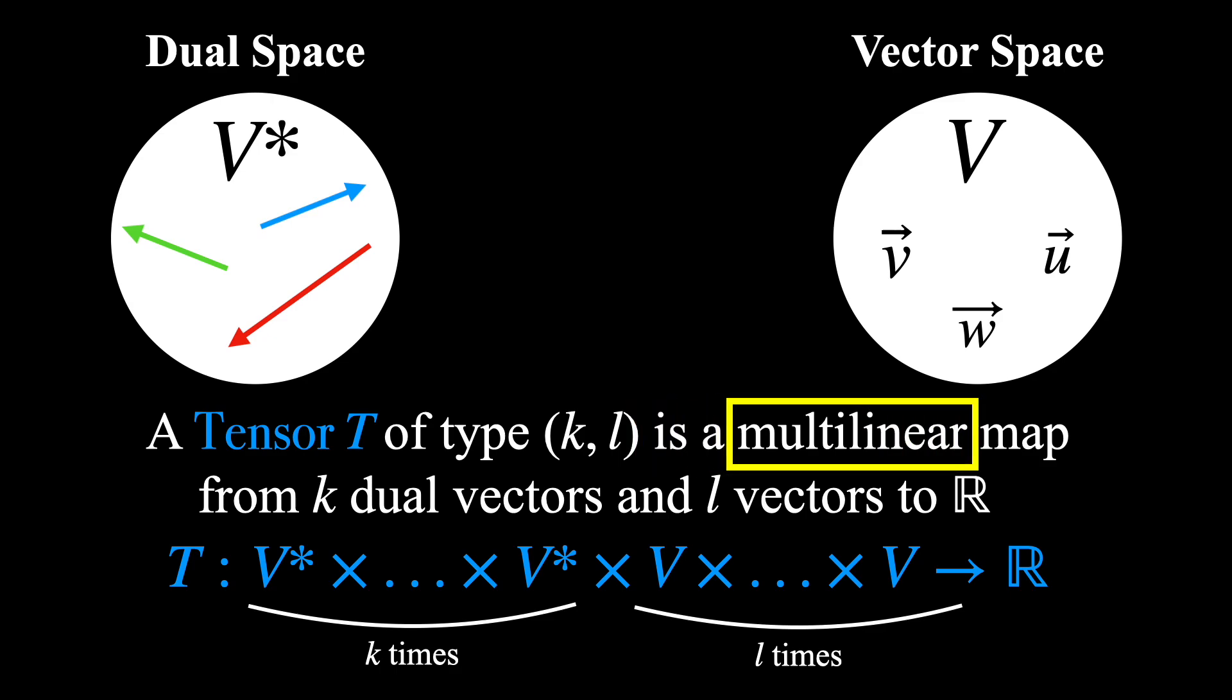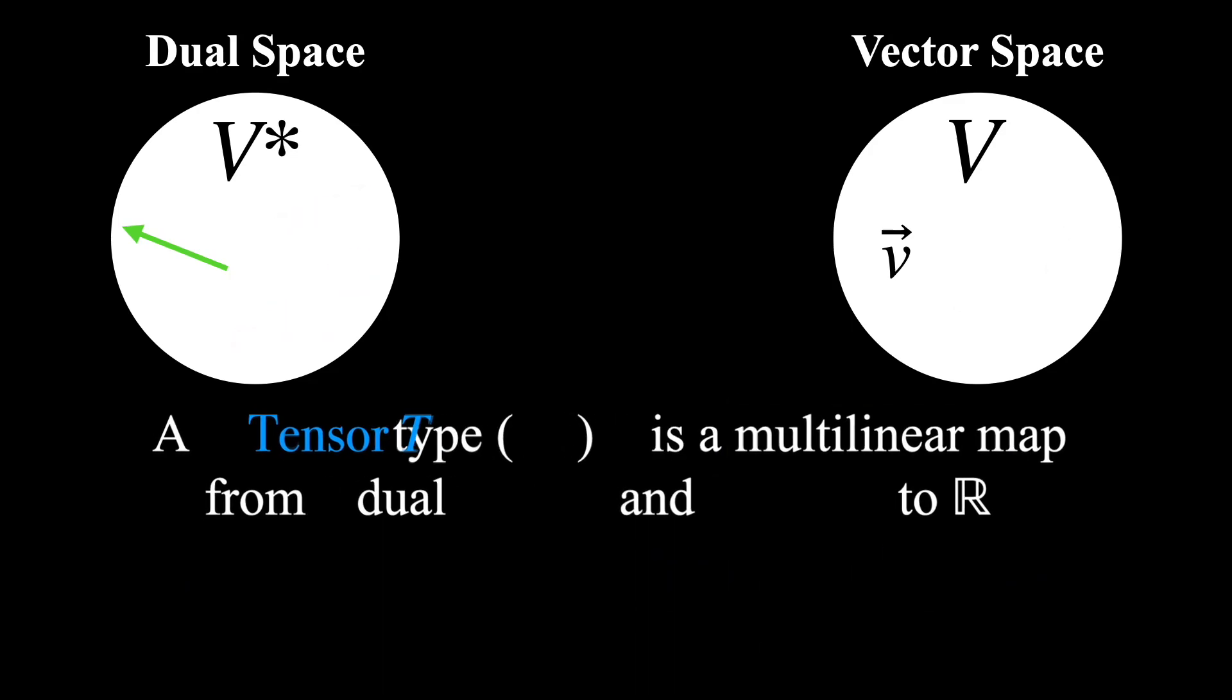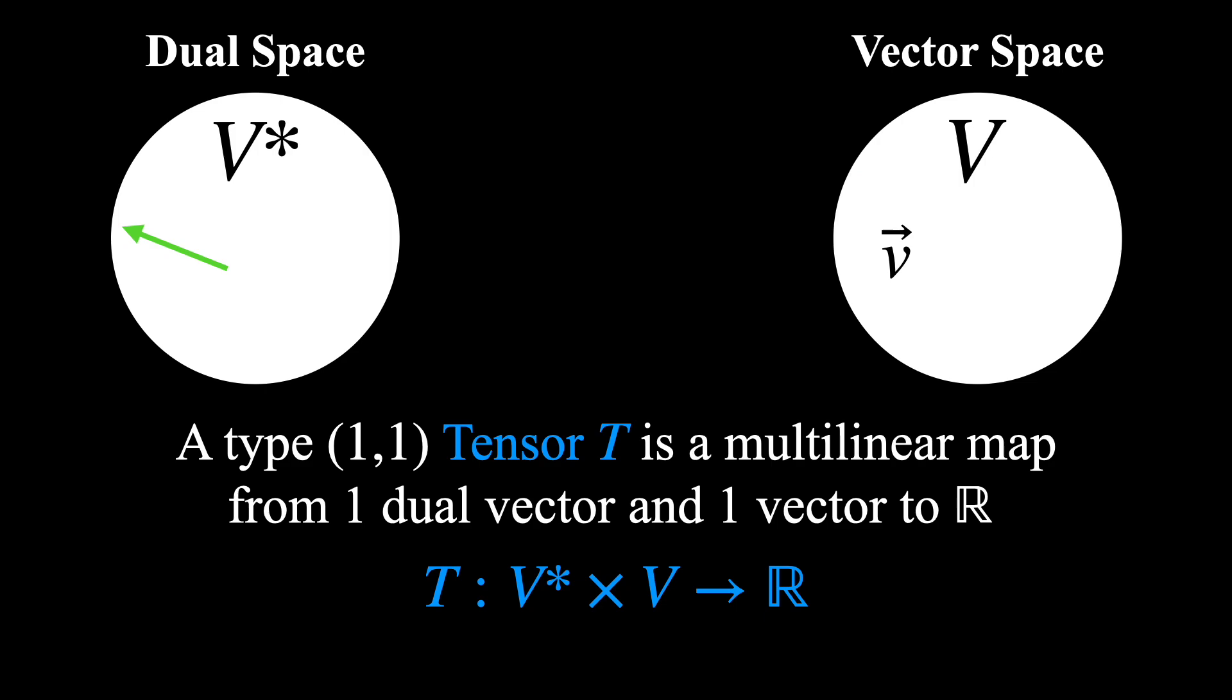Secondly, this map must be multilinear, which basically just means that it is linear in each of its arguments. The best way to understand this is to go through an example. So let's consider a type (1,1) tensor. This means that as inputs, we take one element from the dual space, let's call it φ, and one element from the vector space, which we'll call v. And to see how multilinearity works,